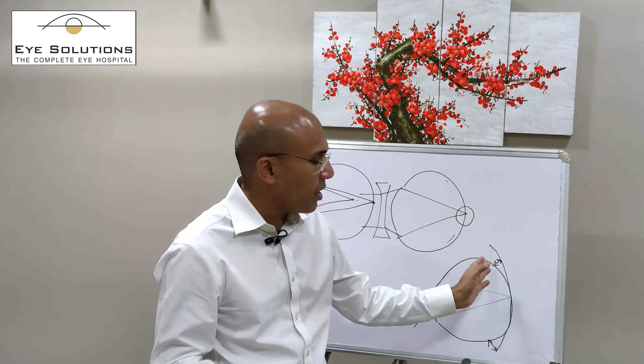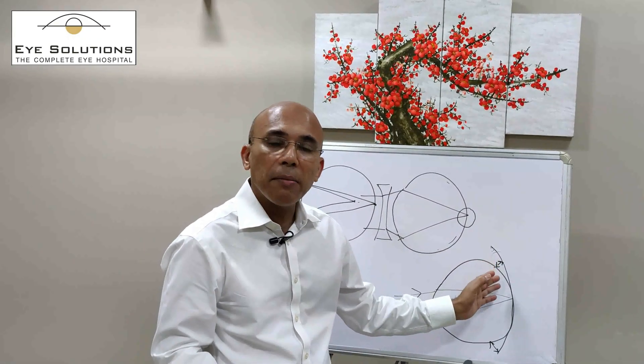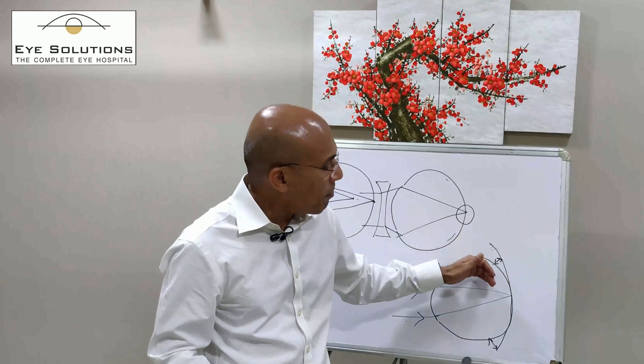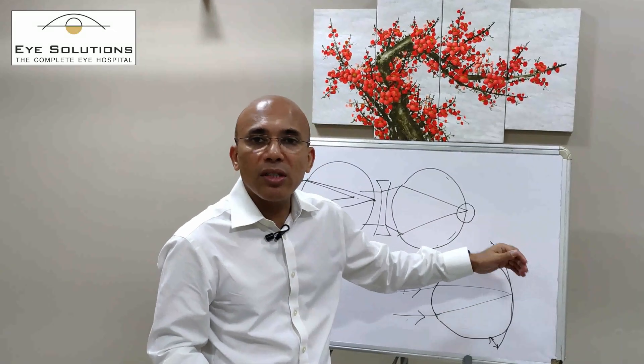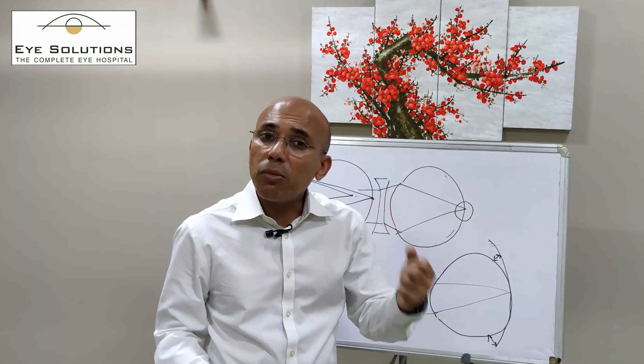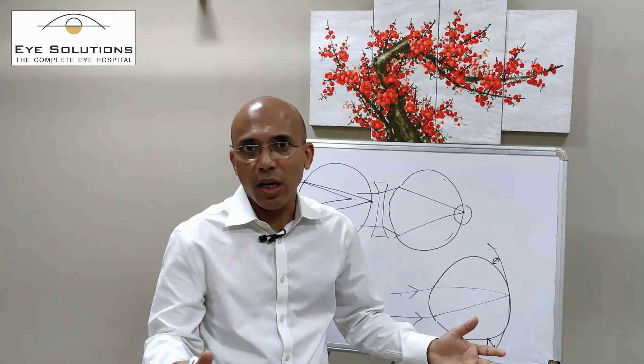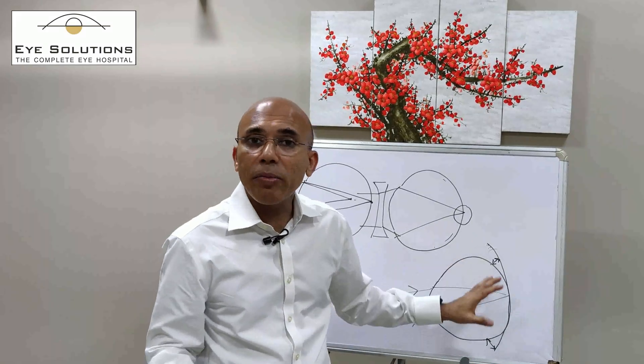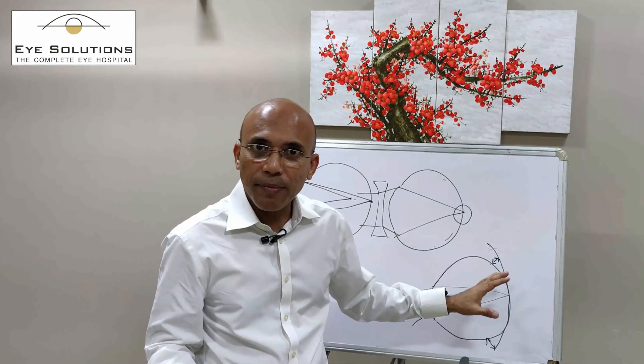A hyperopic defocus is when the rays of light meet behind the retina. This hyperopic defocus is a stimulus for the eye to grow longer — the signal that the eye sends to the brain is that the eye is shorter than what it should be and needs to grow longer. And thus, there is myopia progression.